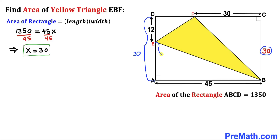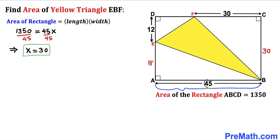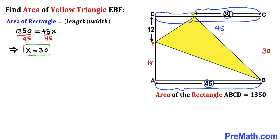Therefore, side length EA is going to be 30 minus 12, which gives us 18 units. Side AB is 45 units, and since we are dealing with a rectangle, the opposite side is also 45 units. Side DF is going to be 45 minus 30, which equals 15 units.